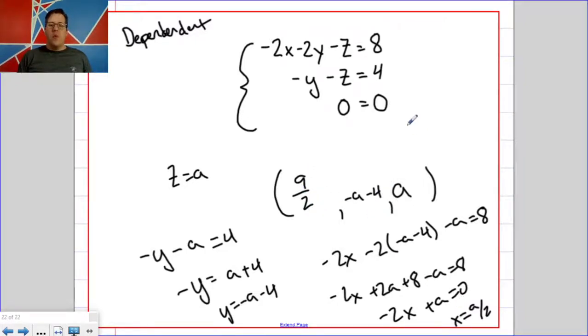So if you pick an a value, say you pick 6, then that would give you the x value and the y value, 3 and negative 10, that you could plug into the system that would work.